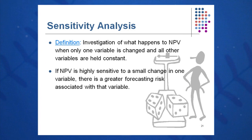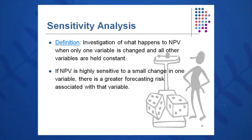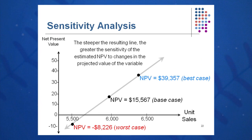The second type of what-if analysis is sensitivity analysis, which you may have seen in economics class. It looks at what happens to NPV when only one variable is changed and everything else is held constant. So we might change volume and keep price and costs constant. When we have a highly sensitive NPV to unit sales, you'll see a very steep NPV versus unit sales curve, as you see here. The steeper the line, the greater the sensitivity of the NPV to changes in the projected sales volume.